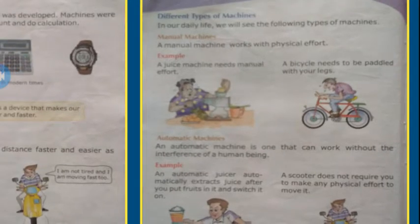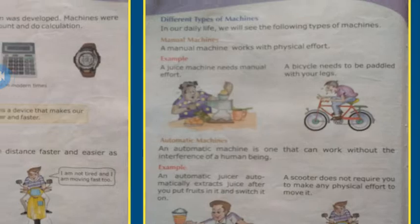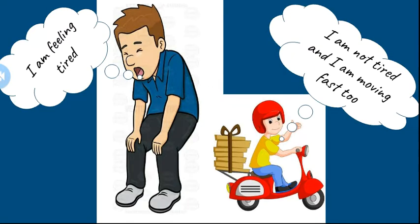There are two types of machines: manual machines and automatic machines. Manual machines work with physical effort. Automatic machines are ones that can work without the interference of a human being. For example, two pictures are shown — one man is saying I am feeling tired, but the second one is happy and saying I am not tired and I am moving fast too. Because the first man was coming by foot and the second man is going by scooter.